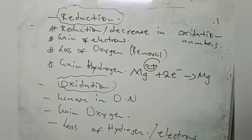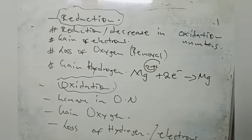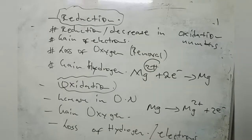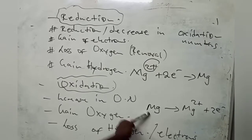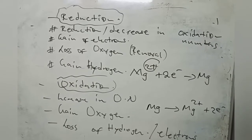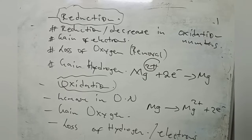On the other hand, the reverse reaction is oxidation. When magnesium loses electrons, they appear on the right side of the chemical equation. The loss of electrons is what defines an oxidation reaction. Oxidation can also be defined in terms of gaining oxygen and the loss of hydrogen.